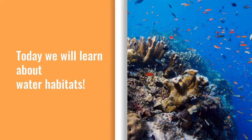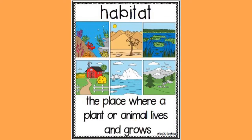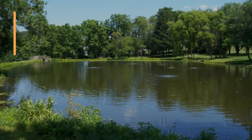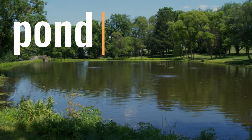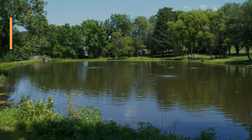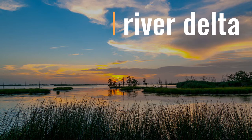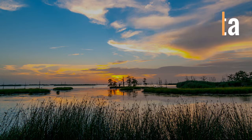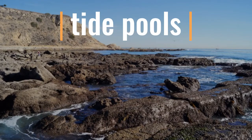Today we will learn about water habitats. A habitat is the place where a plant or animal lives and grows and can get all of its basic needs. We will learn about ponds, river deltas, and tide pools.